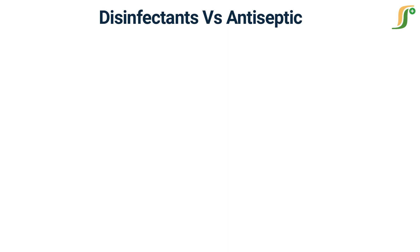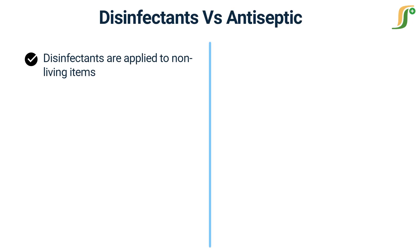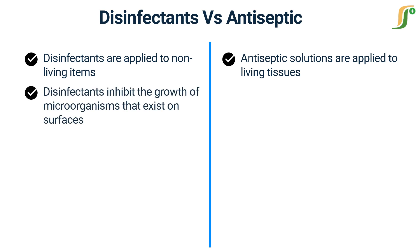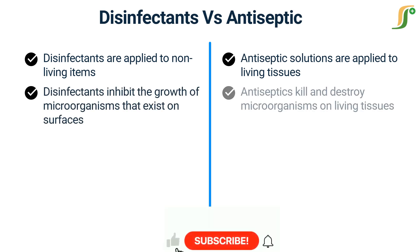There are four main differences between disinfectants and antiseptics. Disinfectants are applied to non-living items while antiseptic solutions are applied to living tissues. They both prevent the spread and infection by disease-causing microorganisms in people. Disinfectants inhibit the growth of microorganisms on the surfaces they are applied to, while antiseptics kill and destroy microorganisms on living tissues.